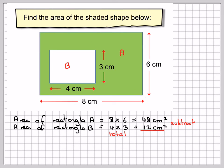So it's like I have the area of the big rectangle take away the area of the small rectangle, which gives me 36 centimeters squared.